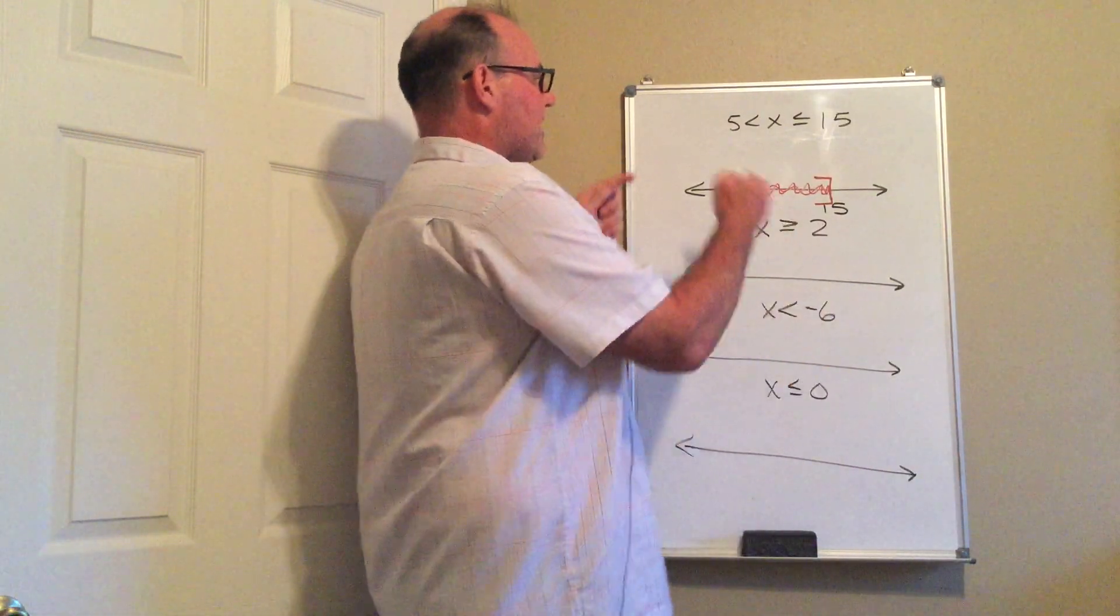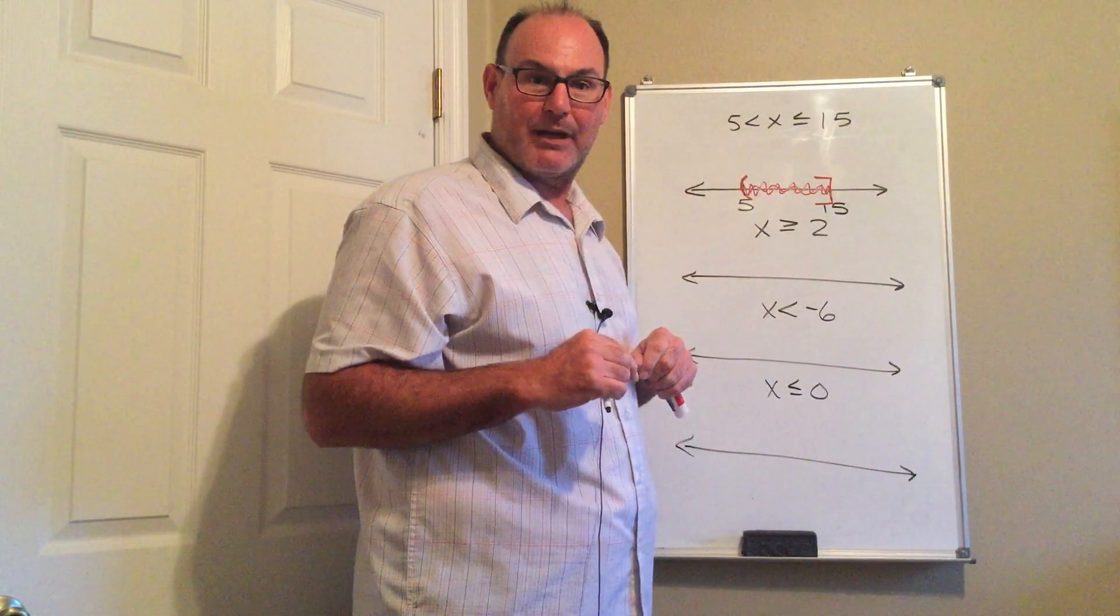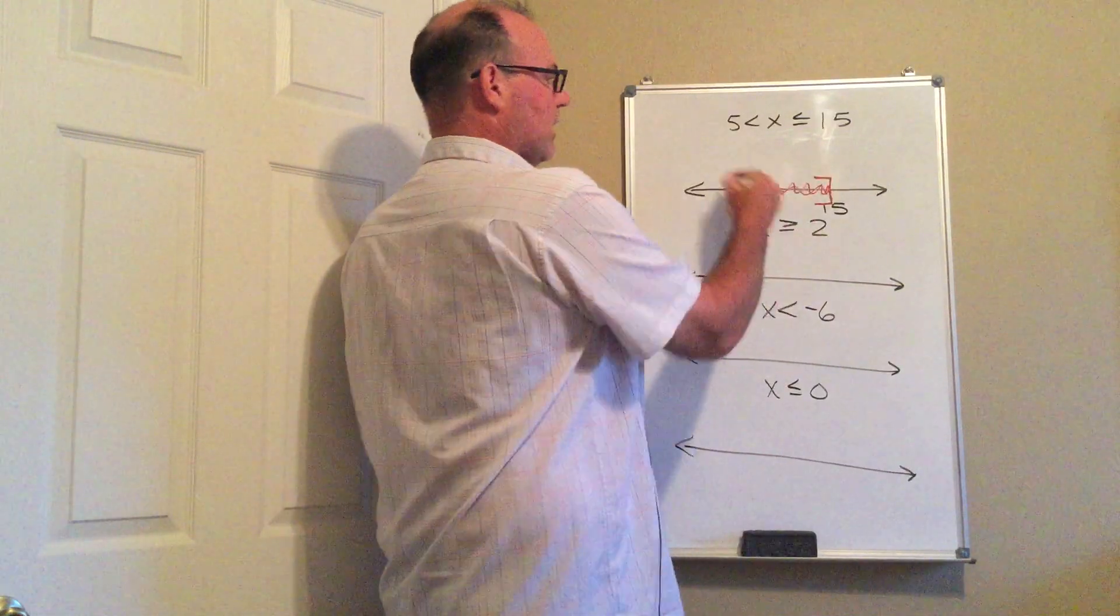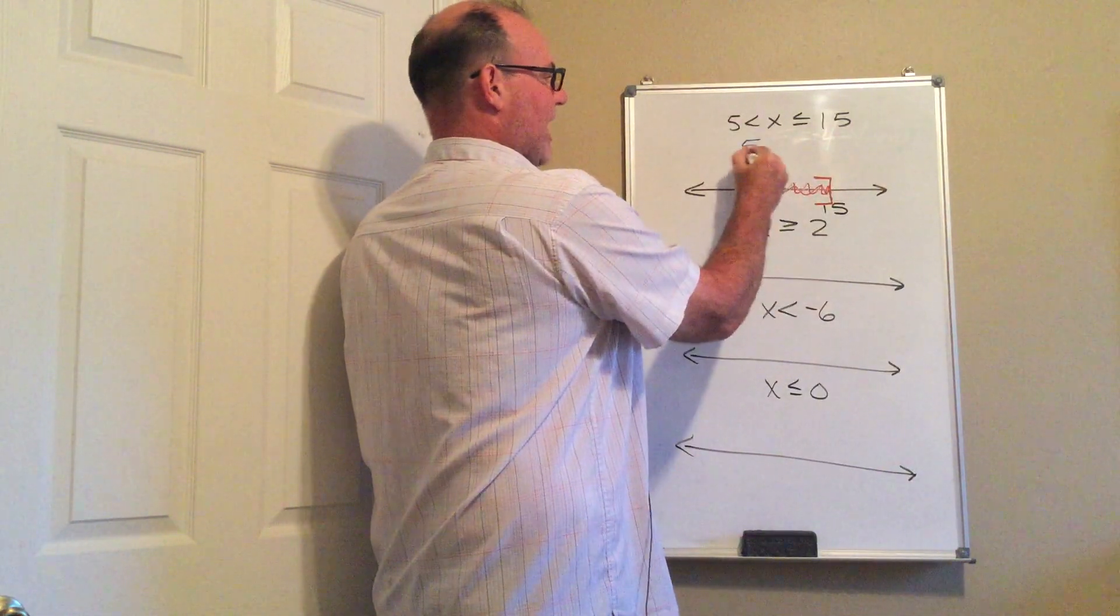So here's how interval notation works. What you do is you tell people what is the lower boundary? What's the lowest value? The lowest value of this picture is 5, comma.